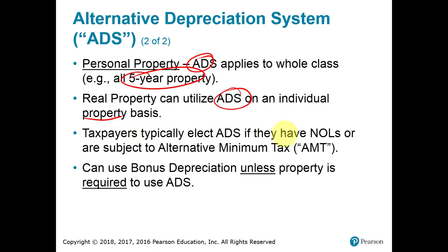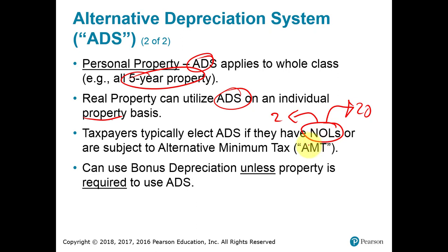The main reason taxpayers extend the life using ADS is that they already have enough deductions — they may already have net operating losses. Net operating losses can be carried back two years to offset prior taxable income and carried forward for the next 20 years. The instructor notes some disagreement with postponing deductions: if you cannot use your net operating loss within 20 years, something is fundamentally wrong with the company's viability.